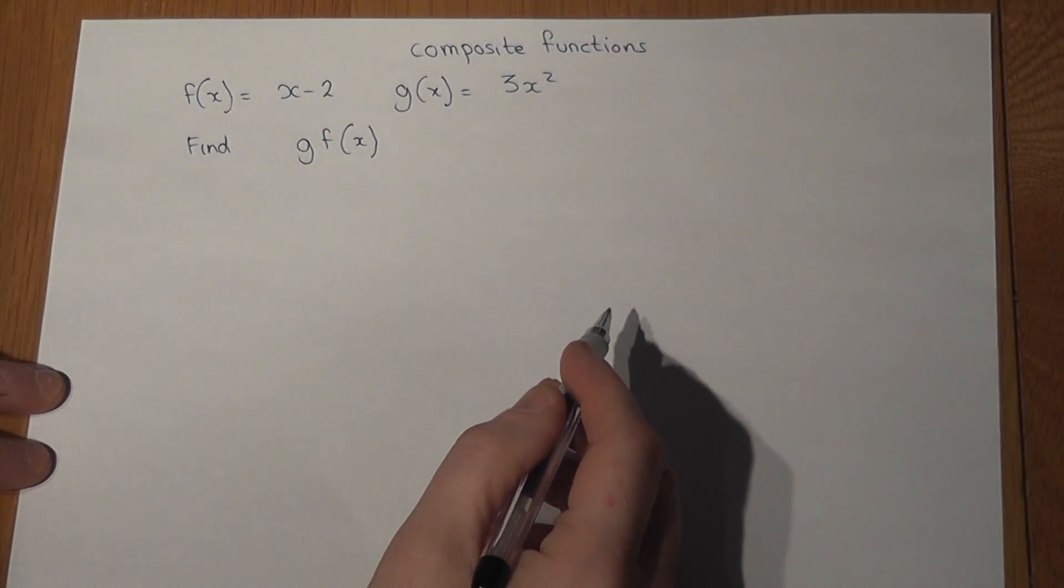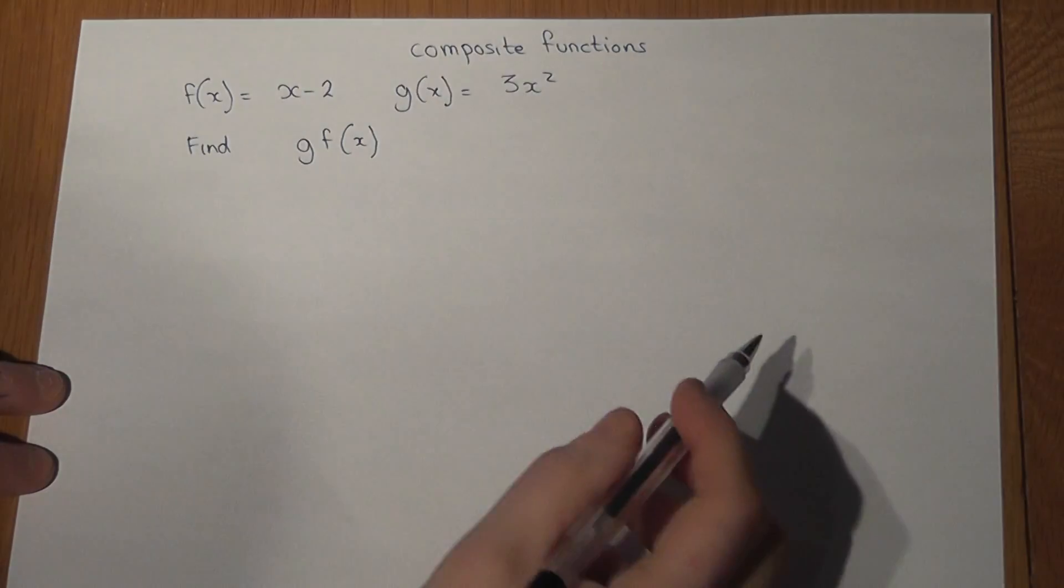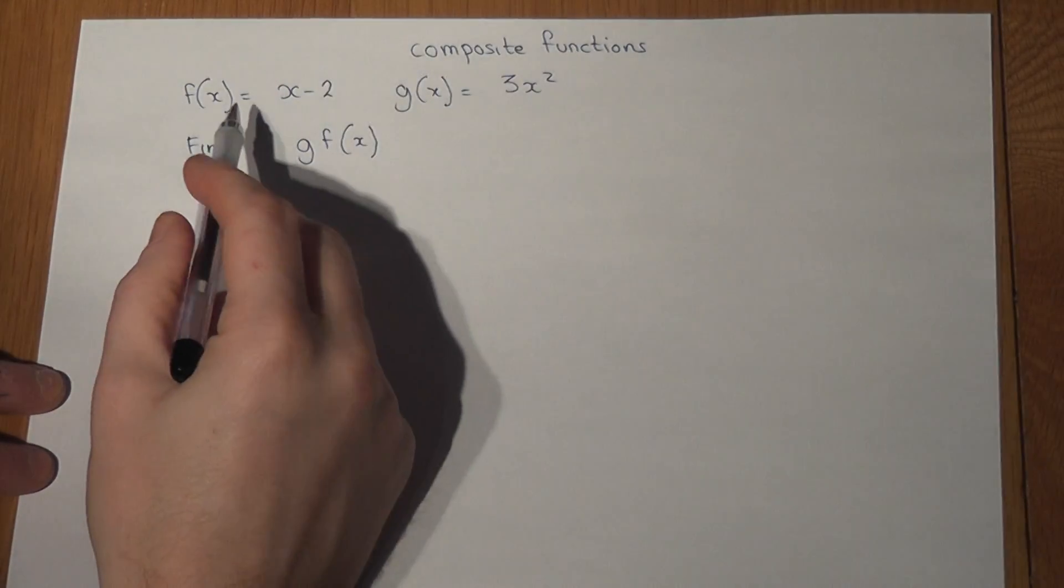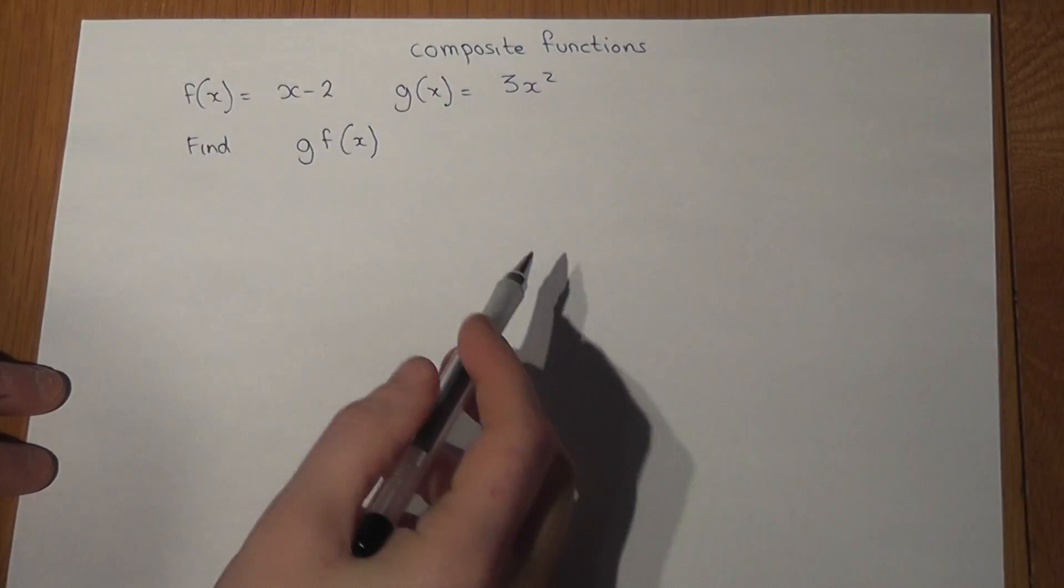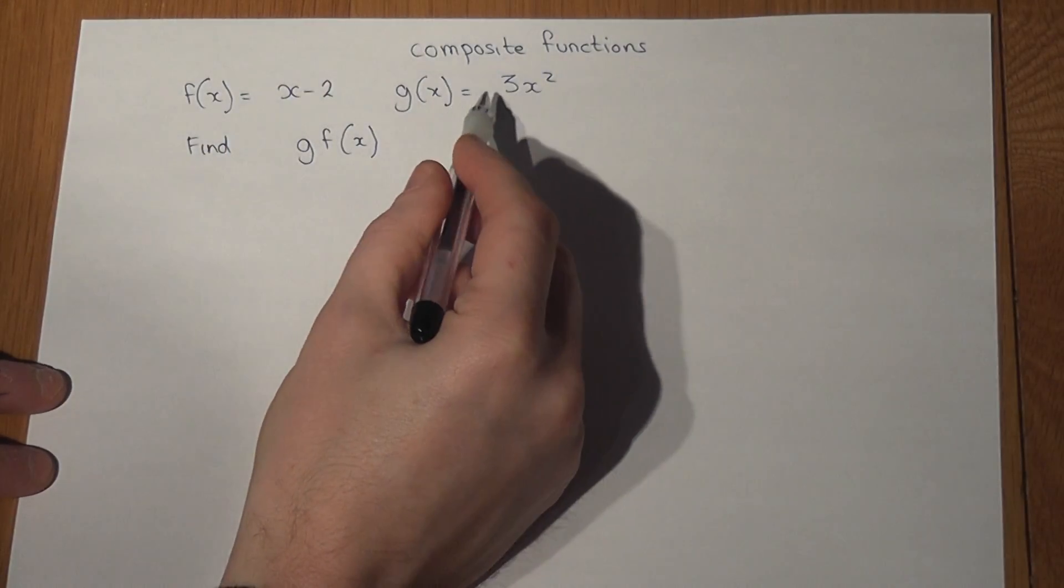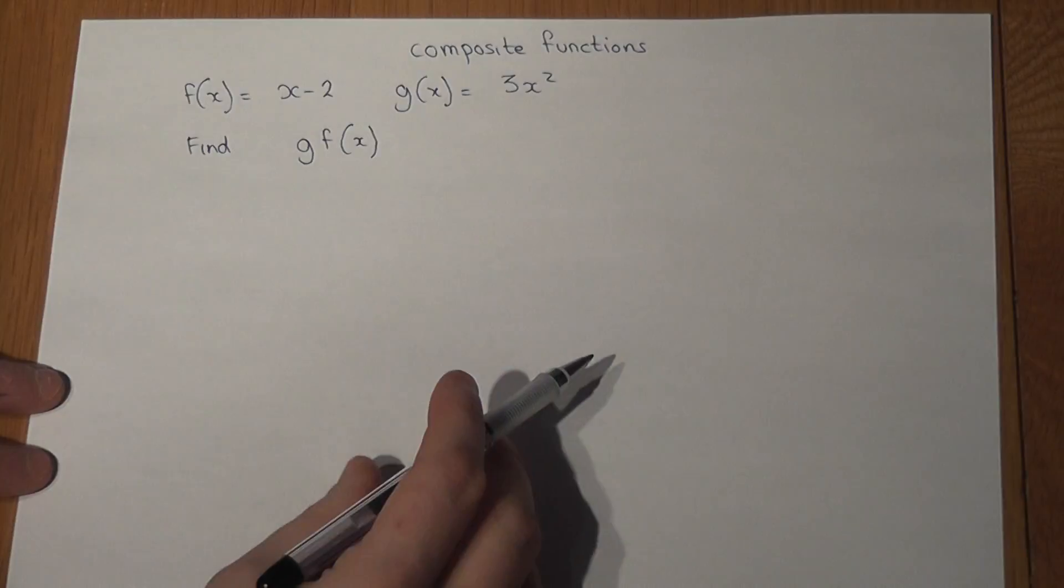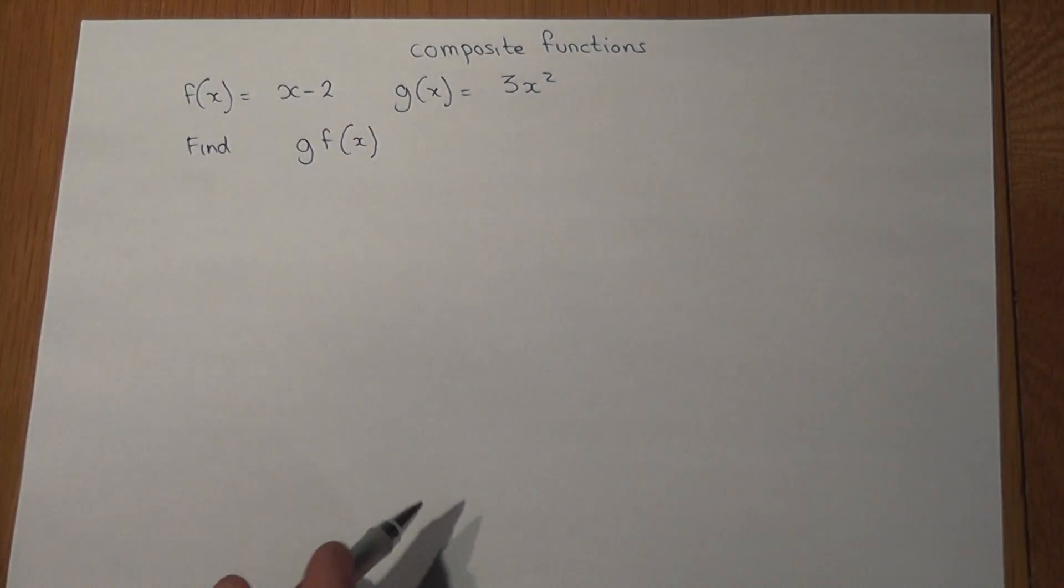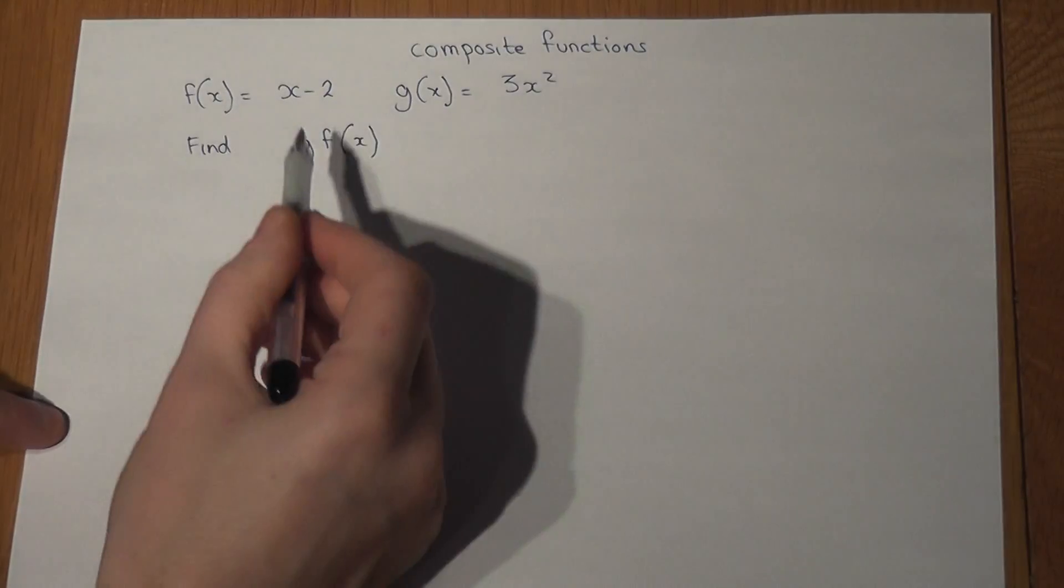This video revises the concept of composite functions. We've got two functions: f of x equals x minus 2, and g of x equals 3x squared. We're asked to find g f of x. Now this notation